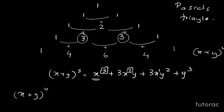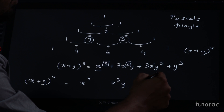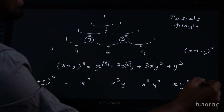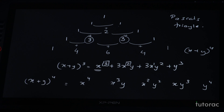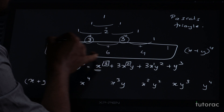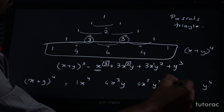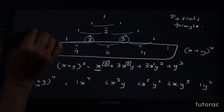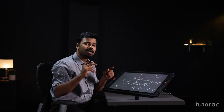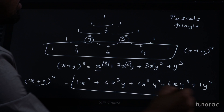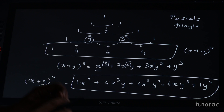So how will you write x plus y the whole raise to 4? Since the power is 4, we write x raise to 4. Then x cube y, because the power of x decreases to 3 and y increases to 1. Then power decreases to 2 and y increases to 2. Again power decreases to 1 and y power increases to 3. And in the last term there is no x because the y power is maximum there. Now we put the coefficients 1, 4, 6, 4, and 1. Since we are taking a sum of two terms, all the expansion terms will be positive. So here we get the expansion for x plus y the whole raise to 4.